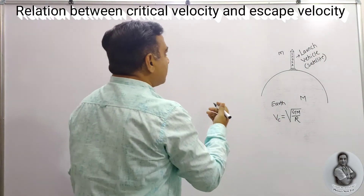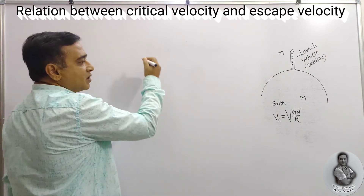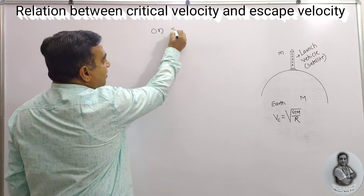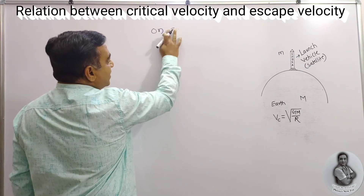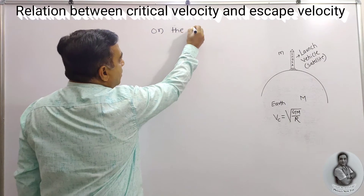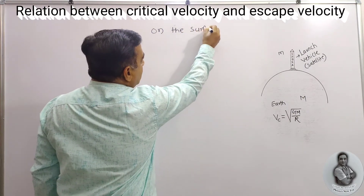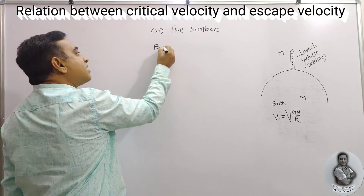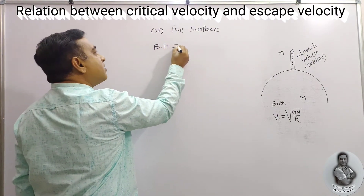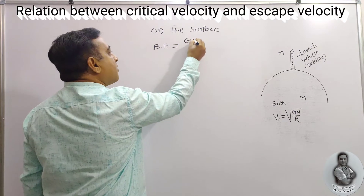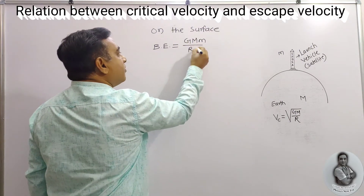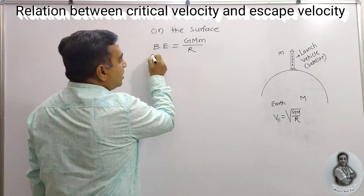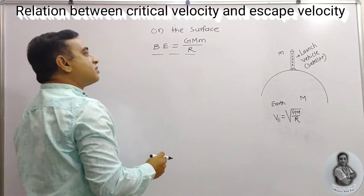The next factor we are going to observe is the binding energy. On the surface of the earth, the binding energy of the satellite is given by GMm/R. We have already calculated this in a previous video — this is the binding energy on the surface of the earth.